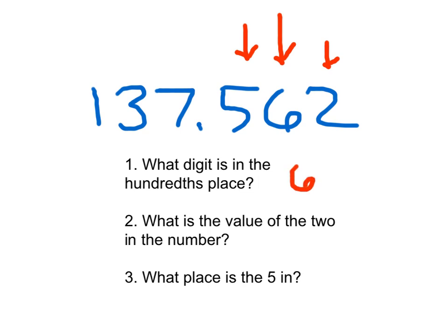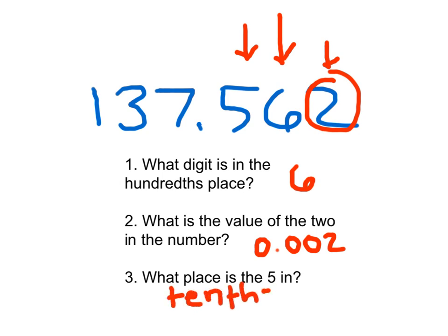Next, it says: what is the value of the two in the number? Here's the two, and it's in the thousandths place, so the value of it is 0.002. Finally, it says: what place is the five in? The five is in what we call the tenths place. The value of it is 0.5, but it is in the tenths place — it is worth five tenths, but it's in the tenths place. There's a difference between value and place value.